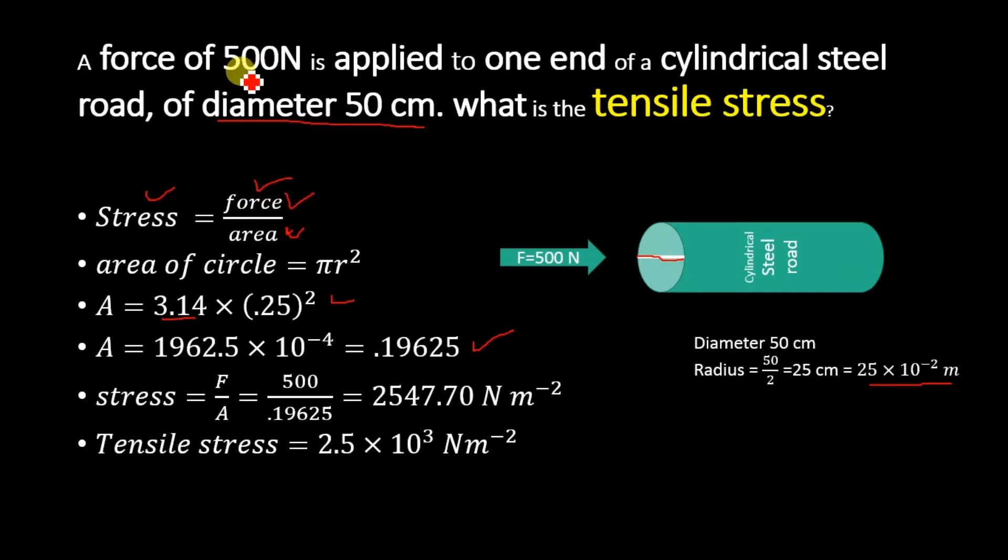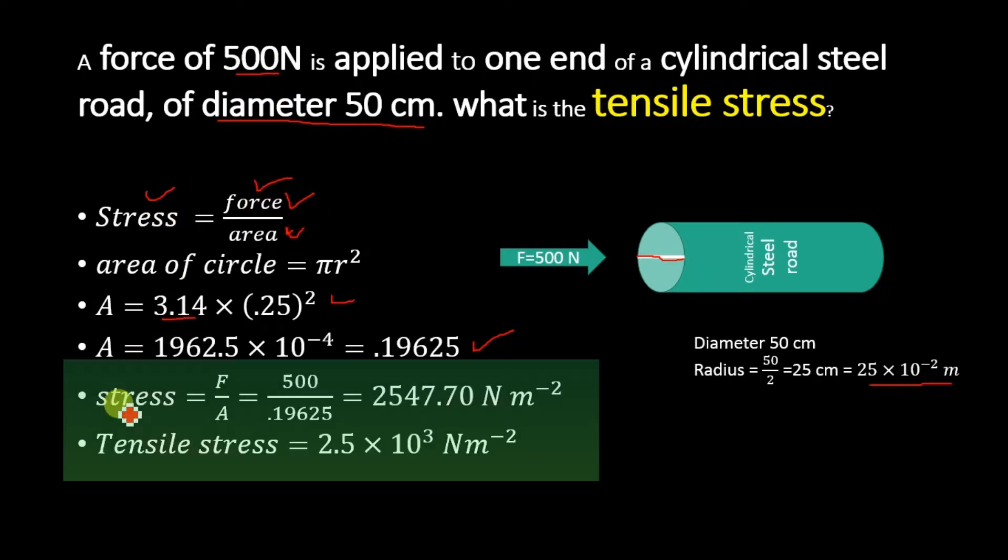Now we have the value of area and the value of force. We know the force is given as 500 Newton. Substituting the value for force and area in this equation, we will get stress is equal to F/A equals 500 Newton divided by 0.19625 meter square, so we will get finally 2547.70 Newton per meter square. This is the unit of stress.